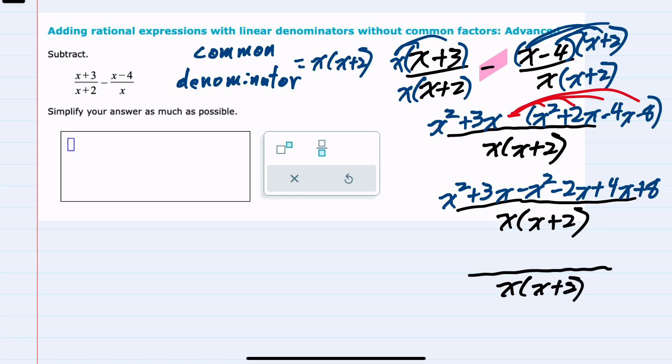Continuing to simplify the numerator, I can now combine like terms. We have a positive x squared and a minus x squared. Those cancel. We have a plus 3x, a minus 2x, and a plus 4x. Those combine to be a 5x. And I'm left with that constant plus 8.